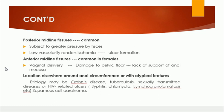Posterior midline fissures are more common because this area is subject to greater pressure by fecal matter when passed during defecation. This area also has low vascularity, which renders it ischemic when hard stool is passed. This low vascularity leads to ischemia, breakdown of the anoderm, and ulcer formation, resulting in anal fissure.